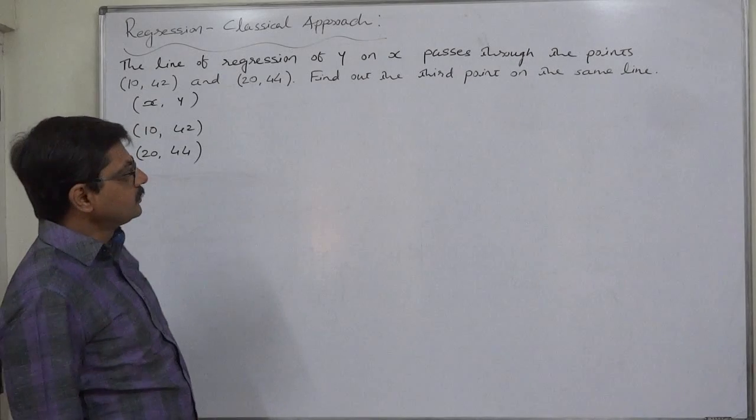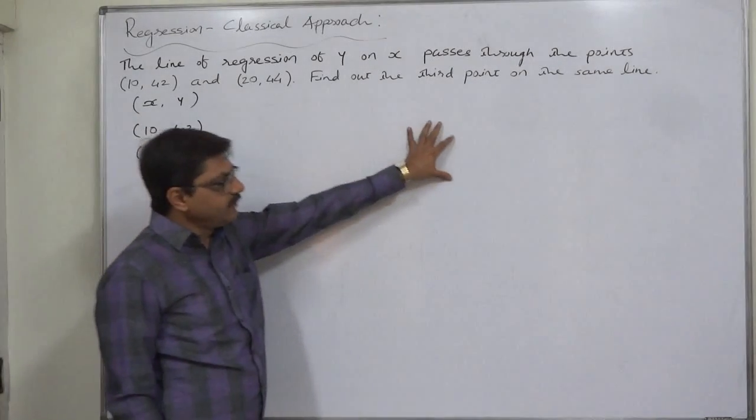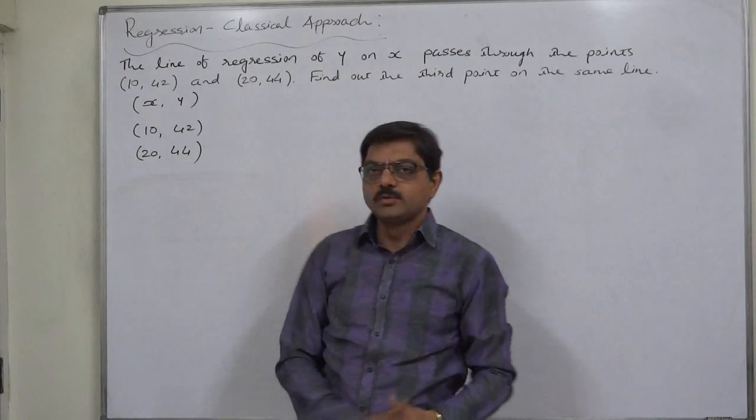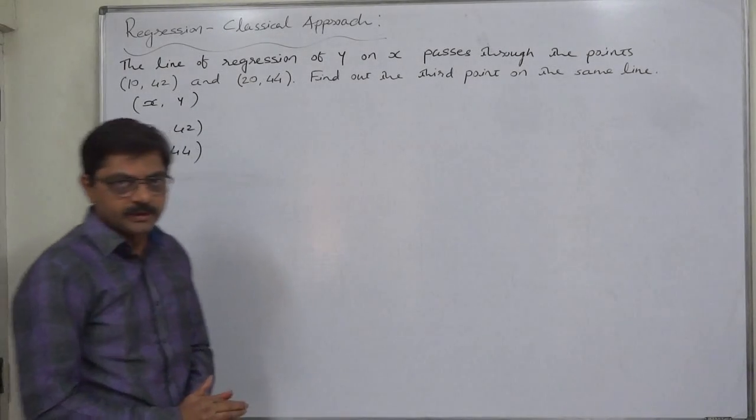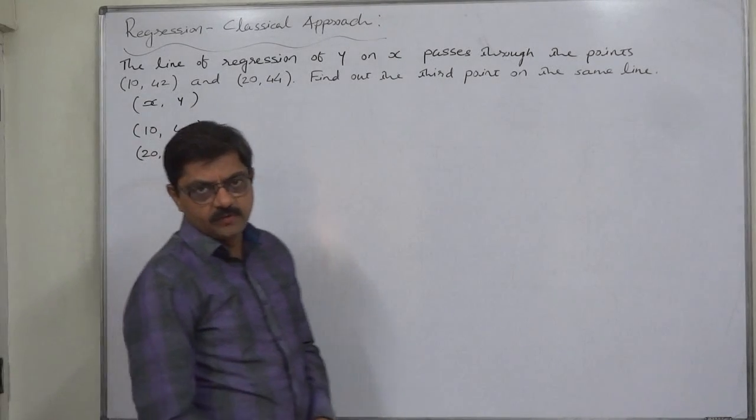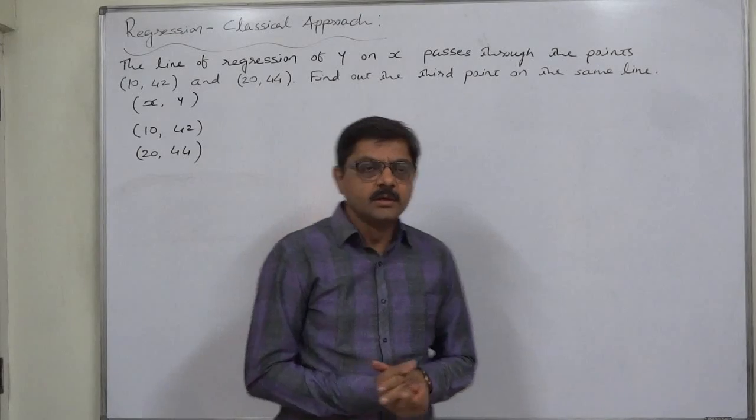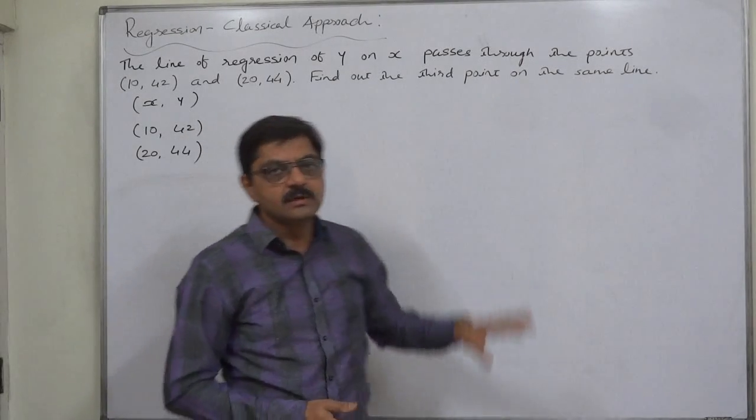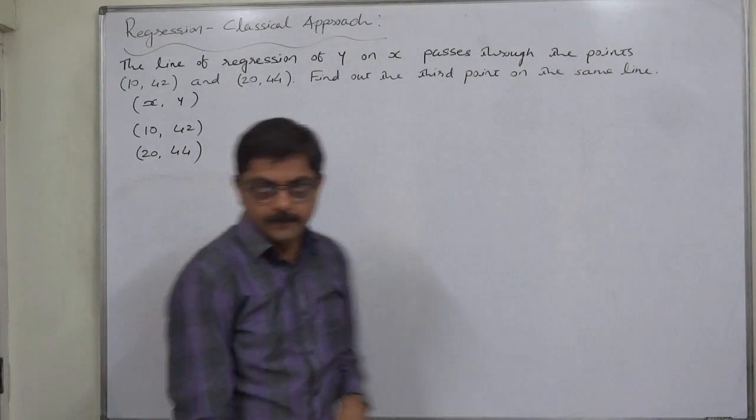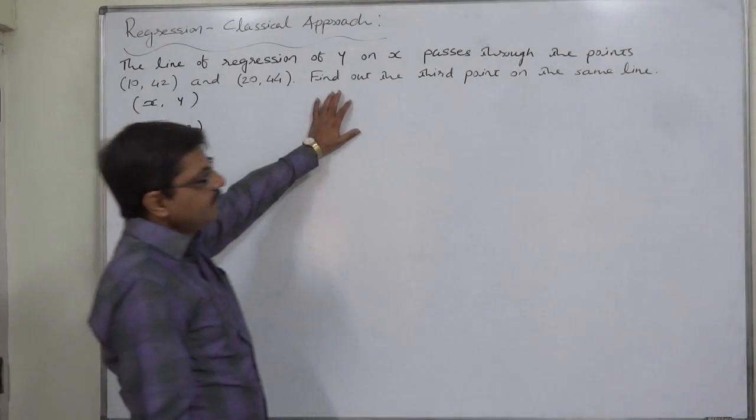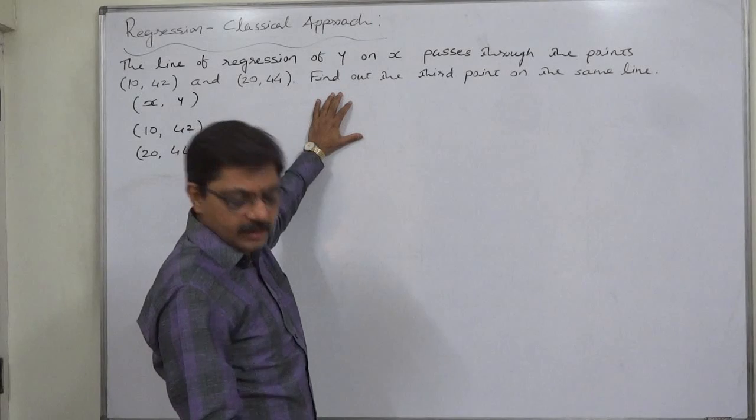One of them is to take a graph paper, draw the line on the basis of these two points, and find out the third point. But we know that this is the chapter of regression or linear regression, and we need to solve the problem mathematically.